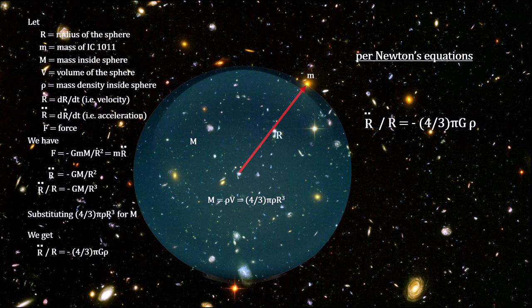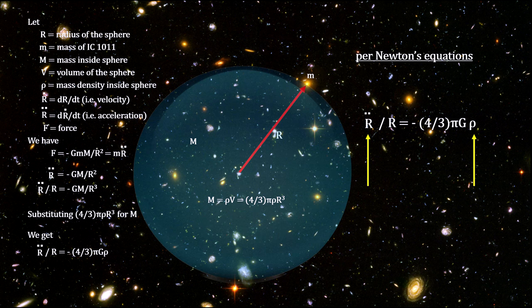If the acceleration, r double dot, is zero, then the mass density of the universe, rho, would have to be zero. In other words, the universe cannot be static unless it's empty.